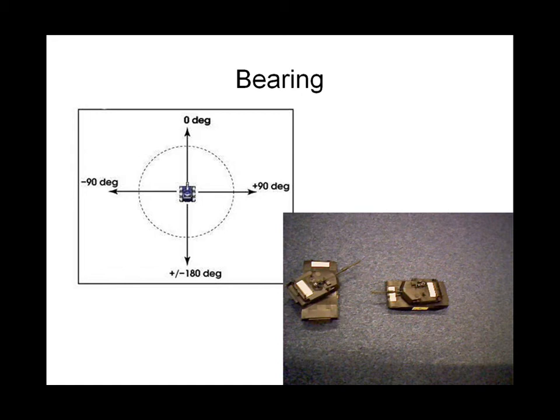If tank B had been on the left hand side, we would have said the bearing was minus 90 degrees. If it had been behind it, we would have said it would be plus or minus 180 degrees.